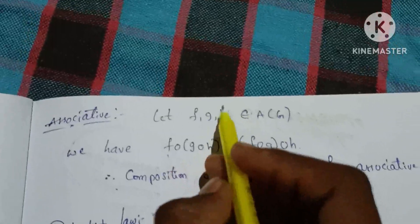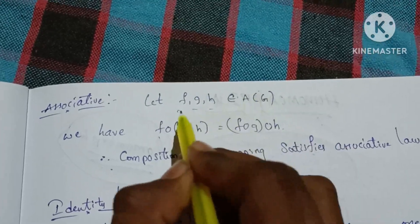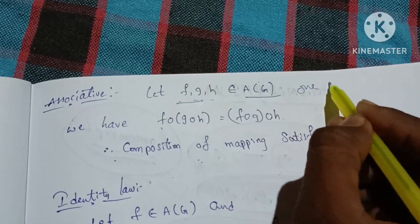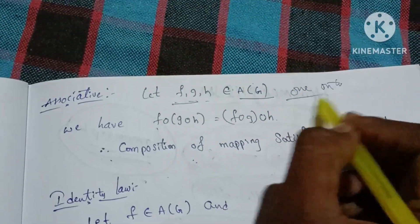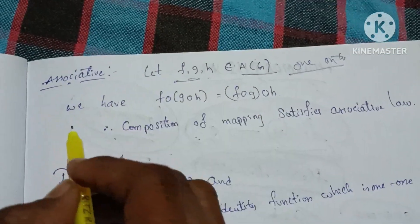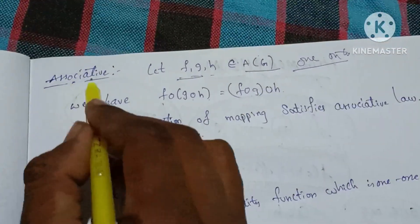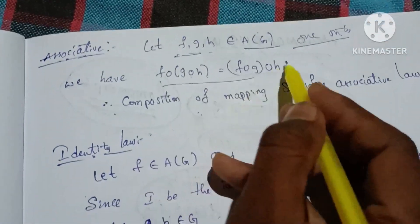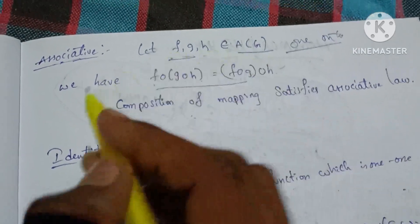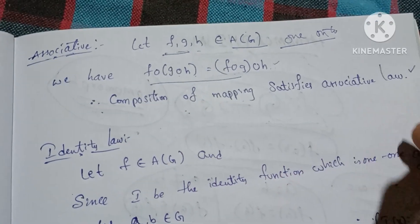The second condition is associativity. Let F, G, H belong to A(G) — three functions in A(G). We know that F circle (G circle H) is equal to (F circle G) circle H. The associative property for composition of mappings is directed. Therefore, composition of mapping satisfies the associative law.